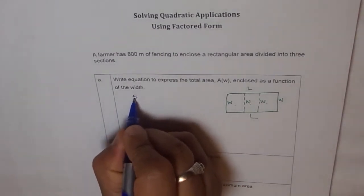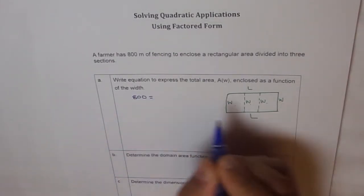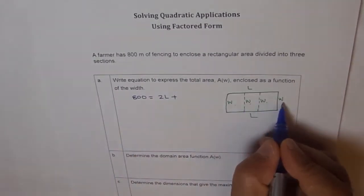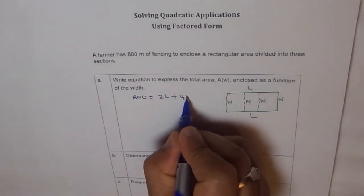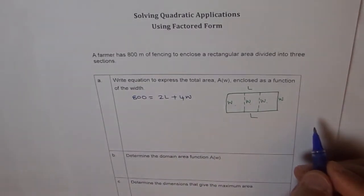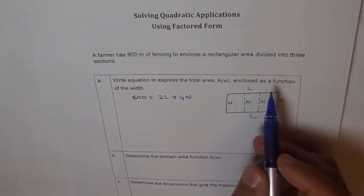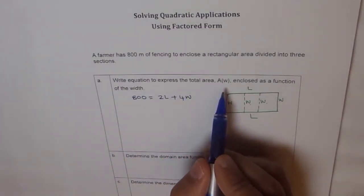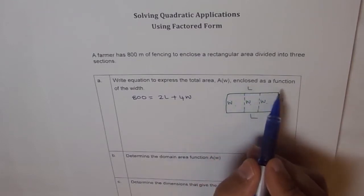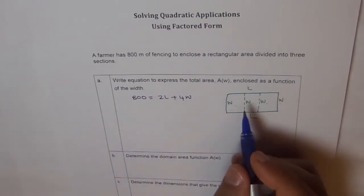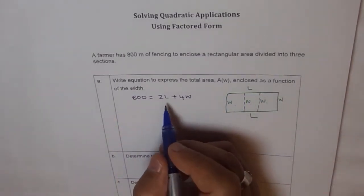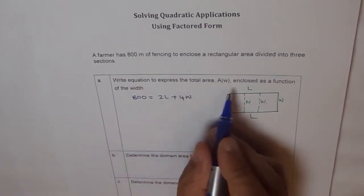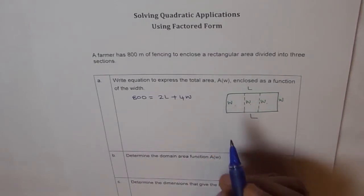So we can say this 800 meters is equal to L plus L which is 2L plus 1, 2, 3, 4W. Now, from here, write an equation to express total area A(W). We want a function in W enclosed as a function of width. So that means we should solve for L and write L in terms of width. And then we will say area as length times width.